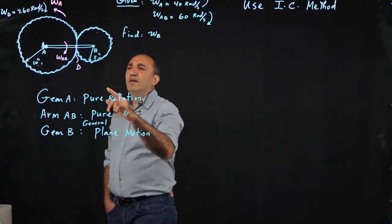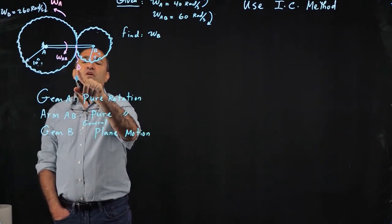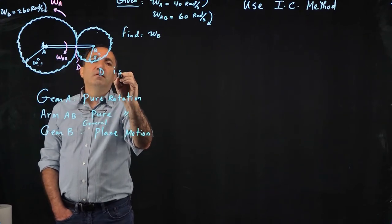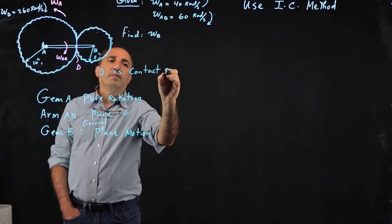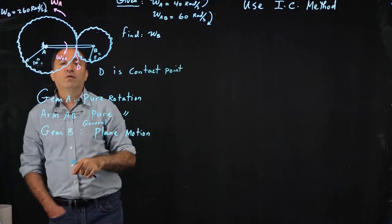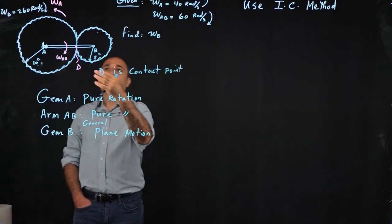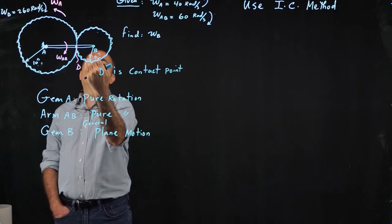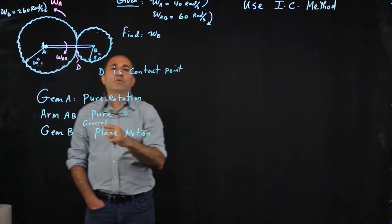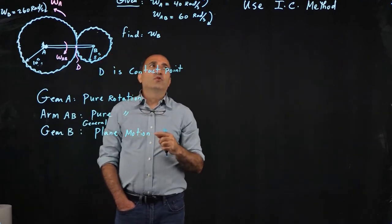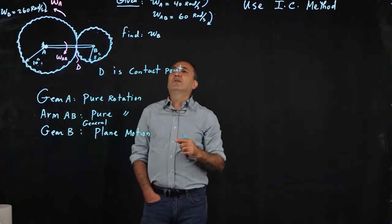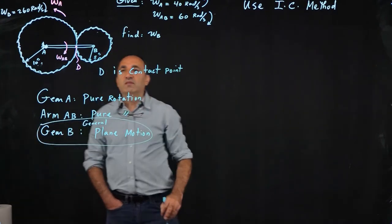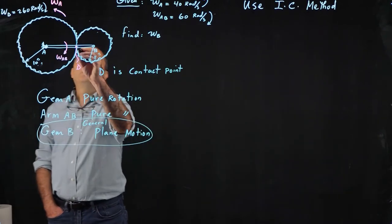Again, if you have watched the video, we need to use the contact point. D is the contact between the two gears. It's not a point on arm AB. D is just a contact point between the two gears. For the IC method, we need velocity of two points on the body that is going through combination of translation and rotation. So the two points happen to be point D and B.